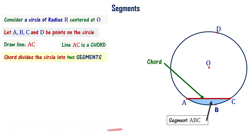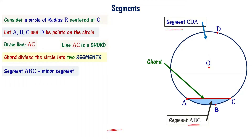The chord divides the circle into two segments. If you look at the chord, it divides the circle into two segments. The other segment is called segment CDA. The segment with the smaller area is called the minor segment — segment ABC is a minor segment. And the larger segment CDA is the major segment.